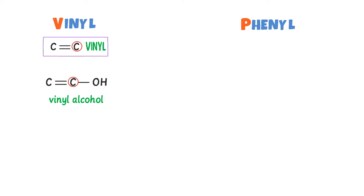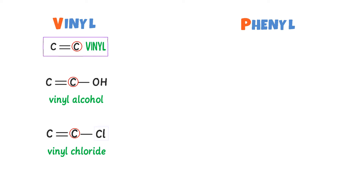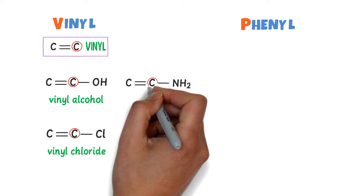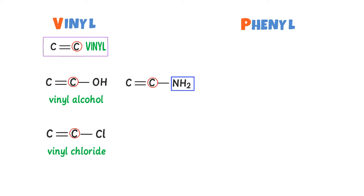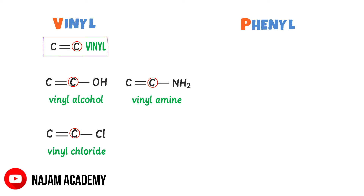Secondly, consider this organic compound — this is the Vinyl carbon, and the functional group Cl is bonded to it. So I get Vinyl chloride. Thirdly, consider this organic compound — the functional group NH₂ is bonded to the Vinyl carbon. So I get Vinyl amine. Thus by this way, we can name Vinyl organic compounds.